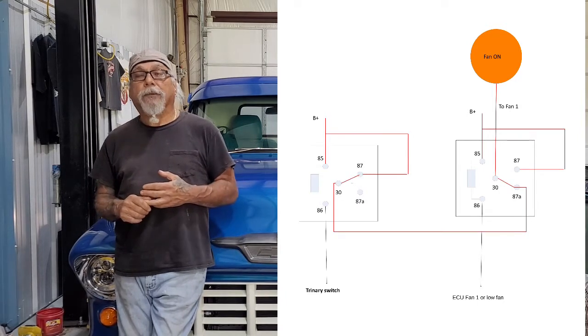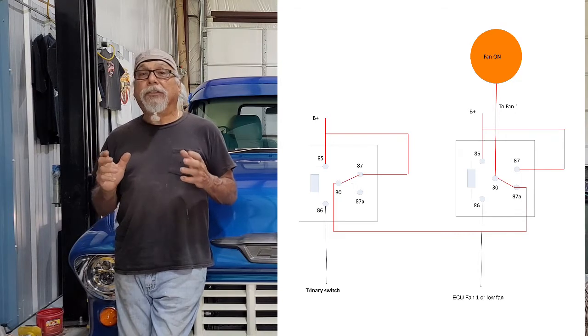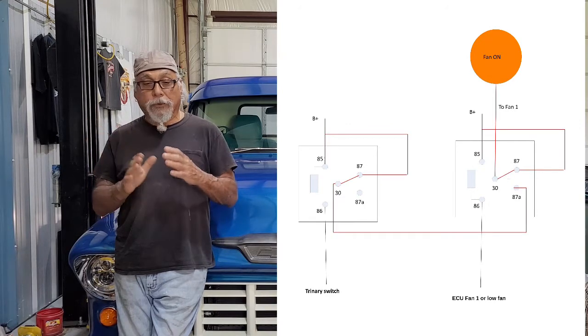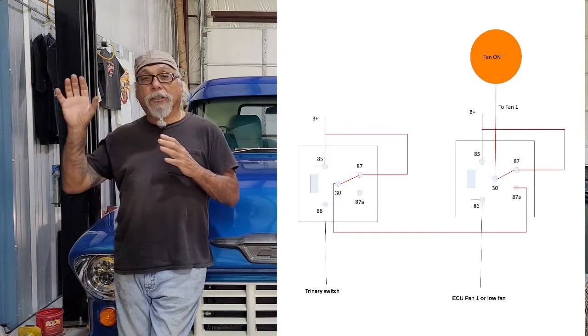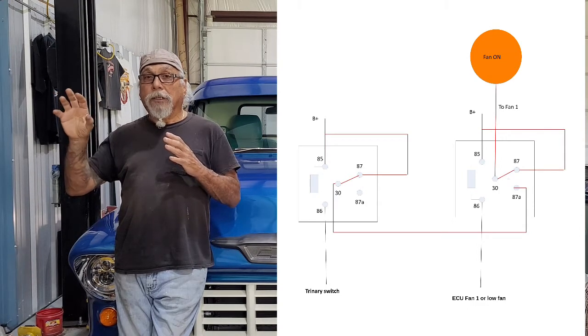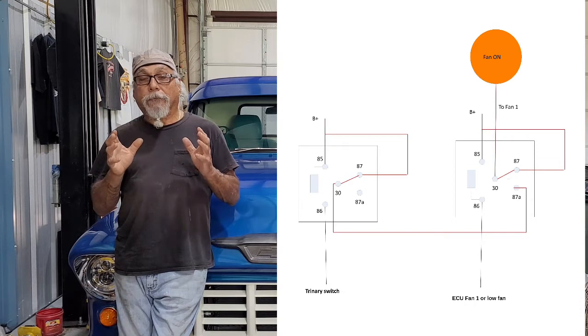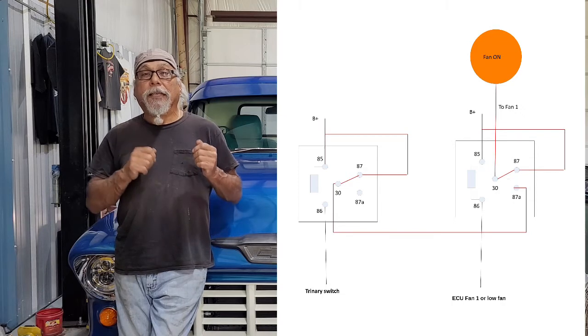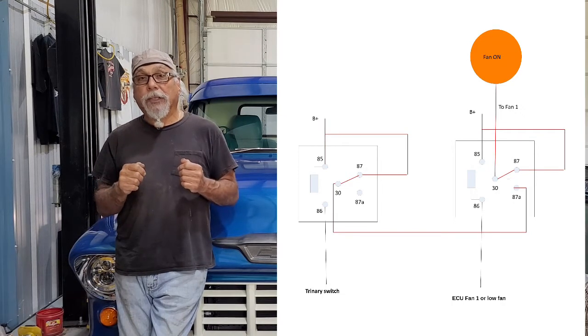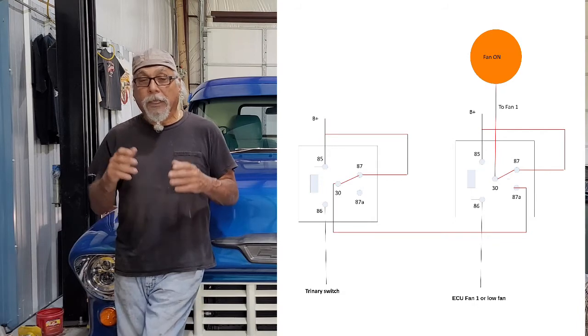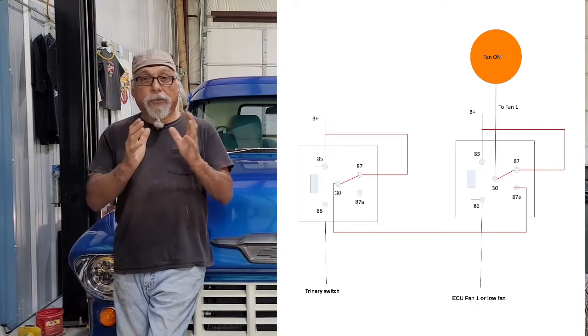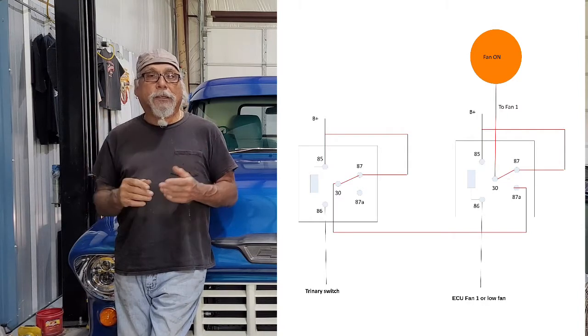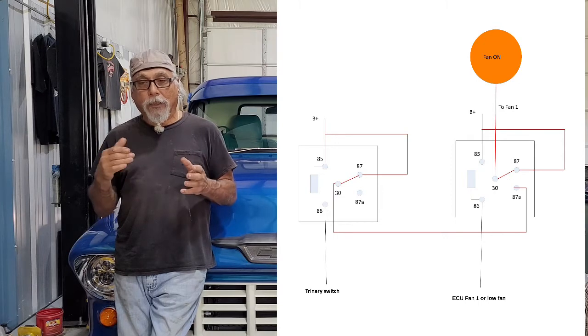But I can turn the fan on. Now if the ECU wants to turn the fan on, it's going to do what it wants to do and it's not going to affect anything. So let's say the trinary relay is on sending power to the fan, and it switches over because the engine got hot enough and the ECU said let's turn on fan one. It's just going to switch from one power source to another. It does it fast enough, it keeps the fan running and there's no blip or anything like that. The fan keeps running.